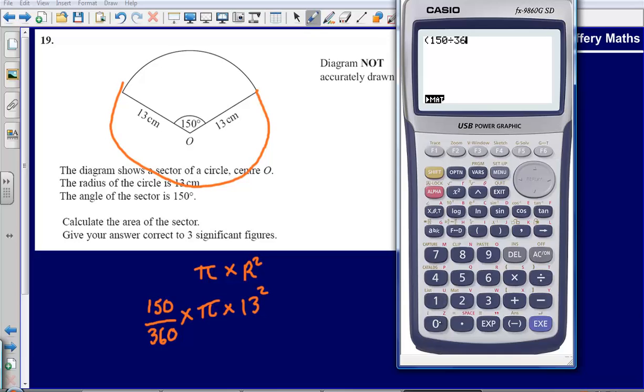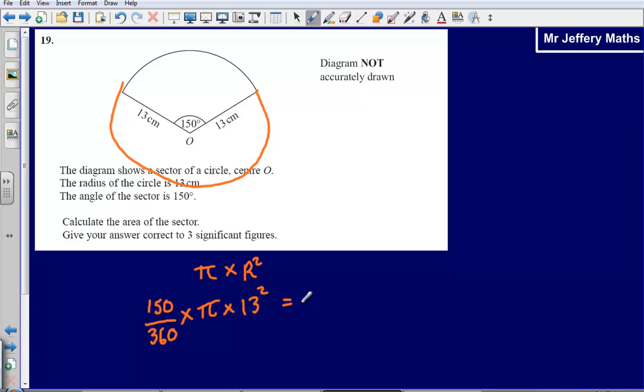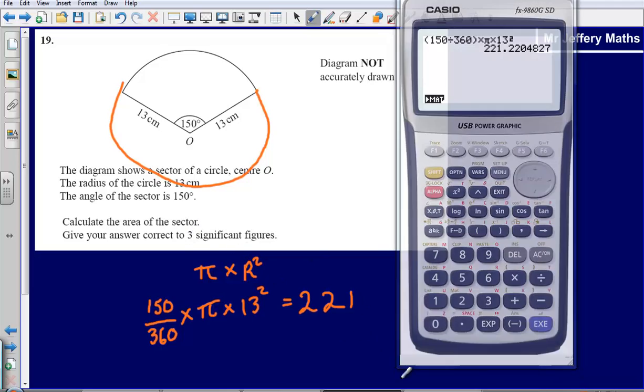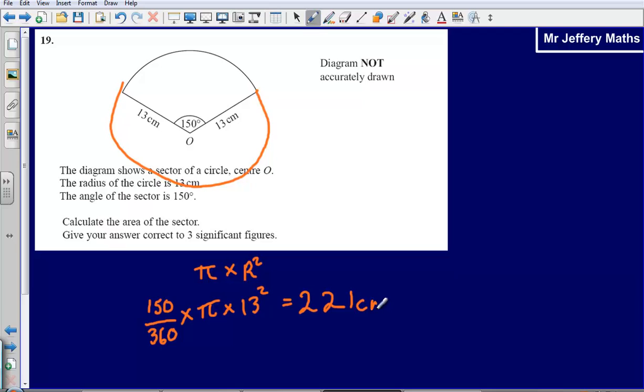So 150 divided by 360, times by π, times by 13 squared. And that gives me an answer of 221.22. It tells me to give my answer to 3 significant figures, so it would simply be 221 cm².